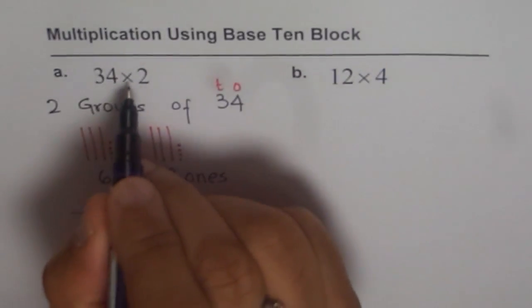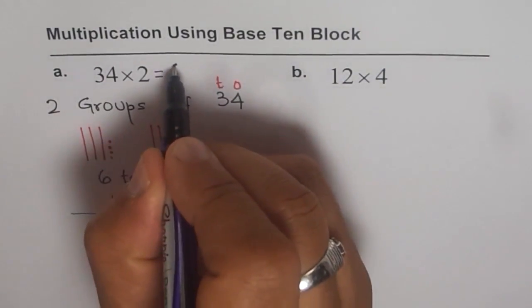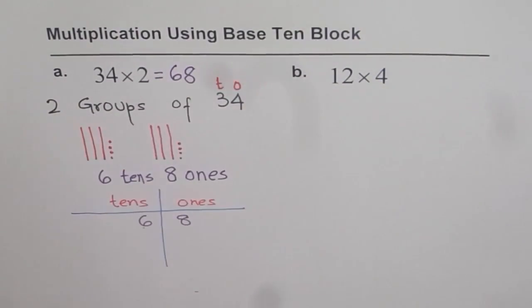Therefore, 34 times 2 is 68. Isn't that simple?